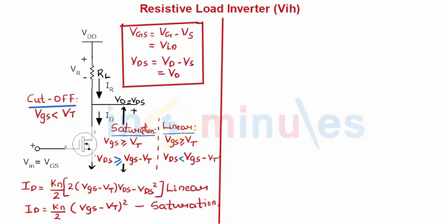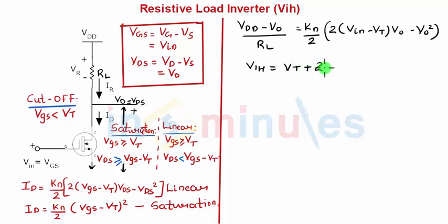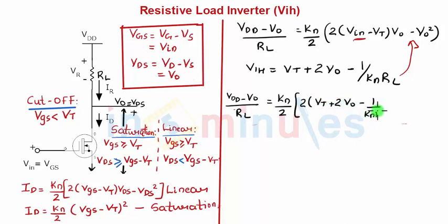Let's write both equations again. Equation 1: (VDD - Vout)/RL = (KN/2)*[2*(Vin - VT)*Vout - Vout²]. Equation 2: VIH = VT + 2*Vout - 1/(KN*RL). Substituting VIH into Equation 1 gives: (VDD - Vout)/RL = (KN/2)*[2*(VT + 2*Vout - 1/(KN*RL)) - VT]*Vout - Vout². This is a quadratic equation in terms of Vout.